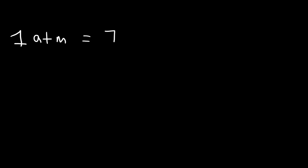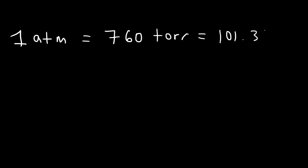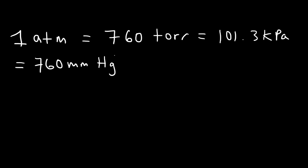You need to know that one ATM is equal to 760 units of torr — that's another unit of pressure — and that is equal to 101.3 kilopascals, and all of that is equal to 760 millimeters of mercury. This unit is typically used when measuring the atmospheric pressure of a barometer, which measures the height of a column using mercury as a fluid.